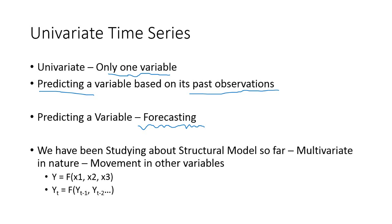We have so far been studying about the structural model. In this channel you might have gone through regression model, logistic regression, then robust regression. All these models are structural in nature and multivariate in nature. So for structural models or multivariate models, how is the mathematical form?